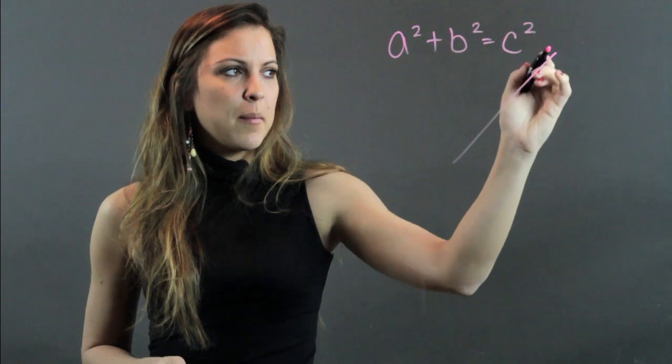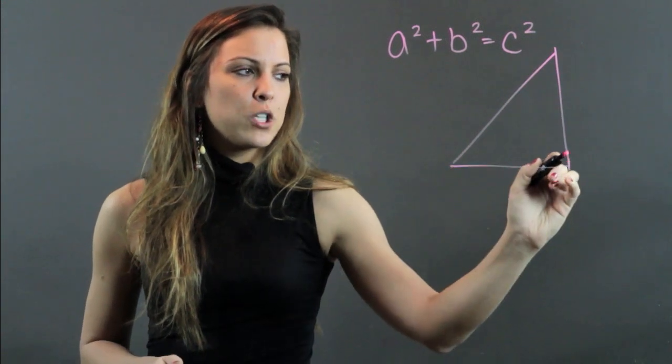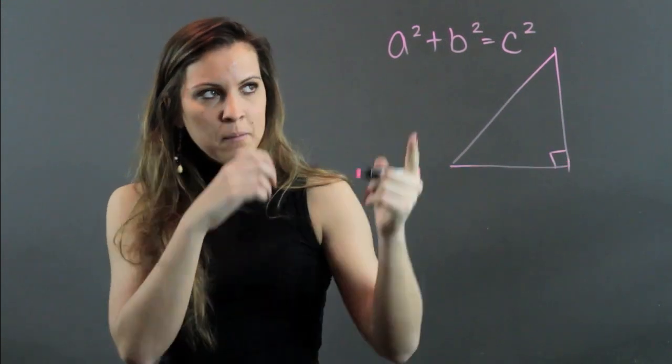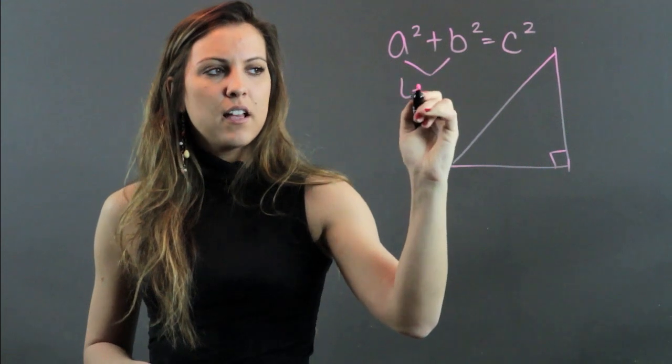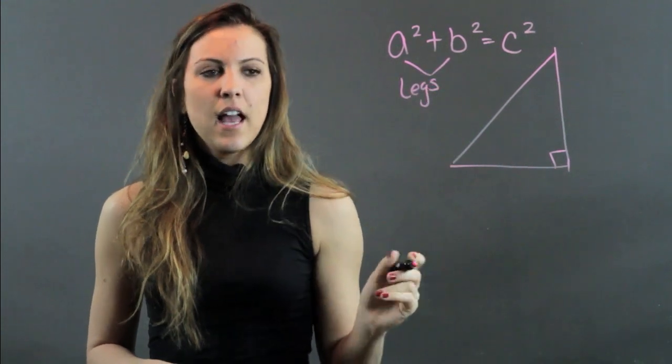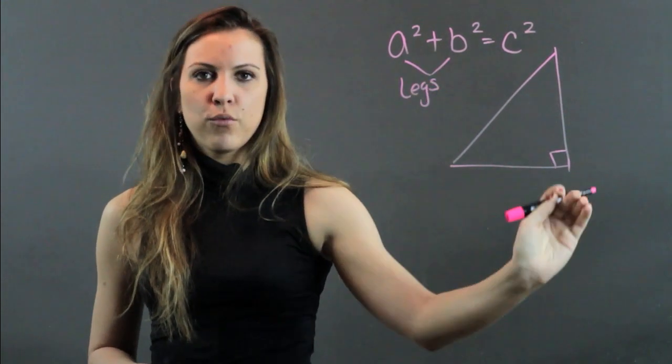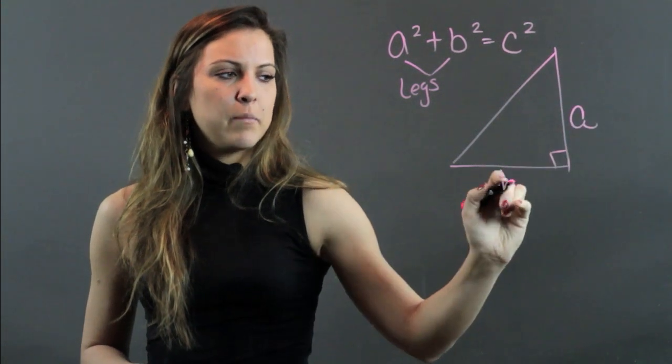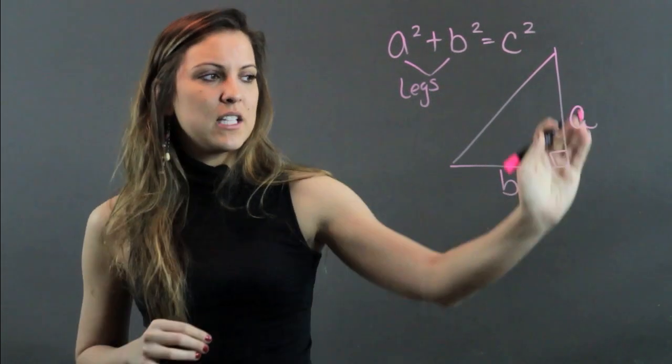And it's really important to be able to label our right triangle correctly and know which part is which. So a and b are always going to be the legs of my right triangle. When I say legs, I mean the two sides that form the right angle. So that's a and that's b, and they are interchangeable because these form the right angle.